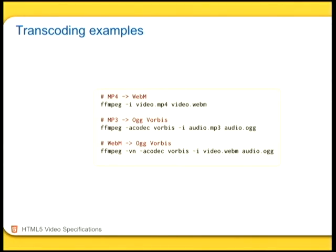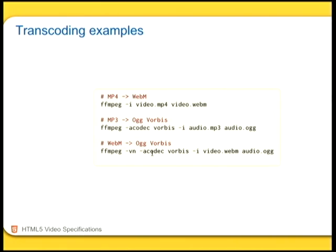I've got a transcoding example. To encode WebM from an MPEG-4 file, it's just like that — it may not always work, so be careful. There are other command line parameters you can add. In particular for MP3 to Ogg, if you don't put -acodec libvorbis, then you don't get Vorbis — you get FLAC in your Ogg file, and FLAC is not supported by browsers. FLAC is Free Lossless Audio Codec. If you want to encode to WebM from a video file but only want the audio track, you can use -vn and just use the audio codec, and you get an Ogg Vorbis file.